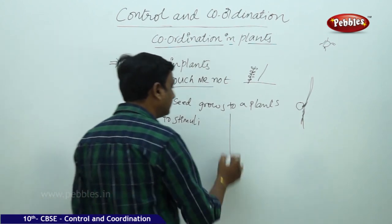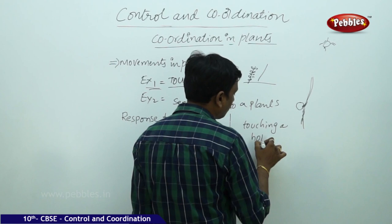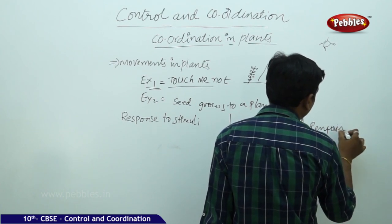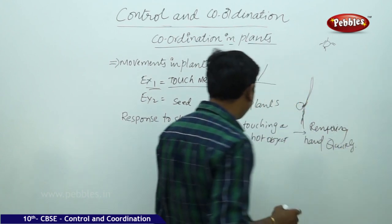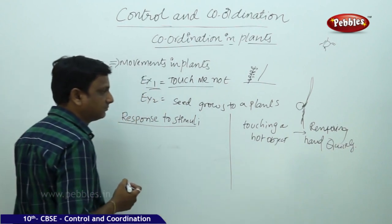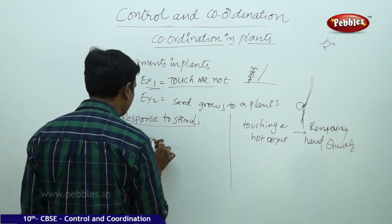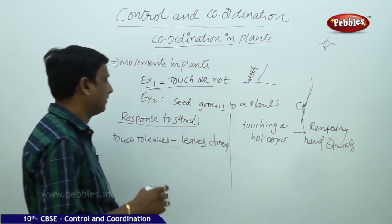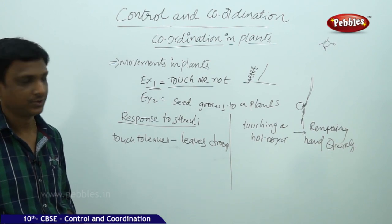You can compare this with a reflex in the human body — like touching a hot object and removing your hand quickly. In animals, the stimulus is touching a hot object and the response is withdrawing the hand. In the case of plants, the stimulus is touching the leaves and the response is that the leaves droop or close. That is what happens — the leaves fold and get closed.